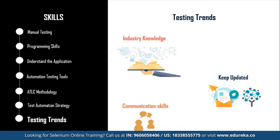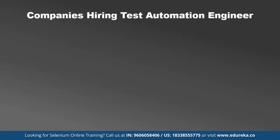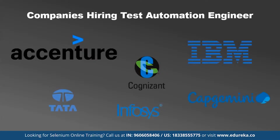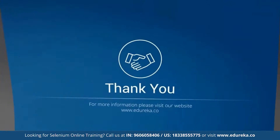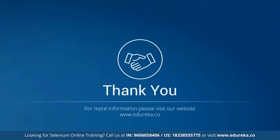Once you have mastered these skills, you are on your way to becoming a successful software test automation engineer. Some of the top companies hiring for this role are Accenture, IBM, Cognizant, Infosys, TCS, and Capgemini. Keep an eye out for opportunities and utilize your skills to grab the offer. That was all about today's session — I hope it will help you get well versed with all the skills needed to become a successful test automation engineer. Thank you and happy learning!